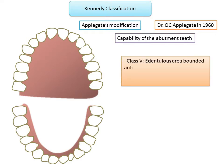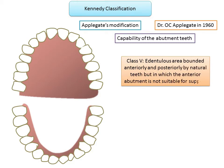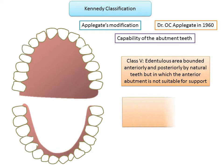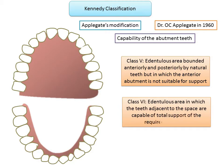Class 5 is an edentulous area bounded anteriorly and posteriorly by natural teeth — essentially a Class 3 situation — but in which the anterior abutment is not suitable for support. For example, if the lateral incisors are the abutment teeth but are not suitable enough to support all the teeth, this is a Class 3 situation where the anterior abutment cannot be used, so it cannot be treated like a conventional Class 3 edentulous space.